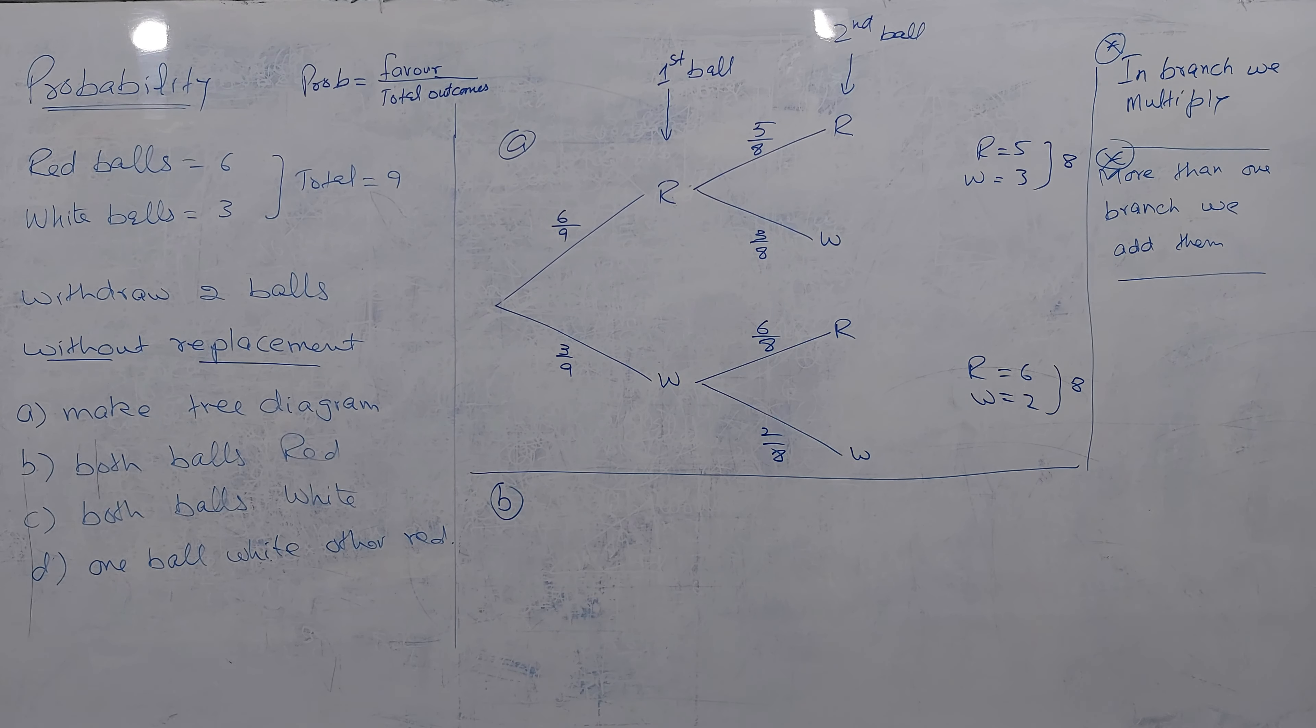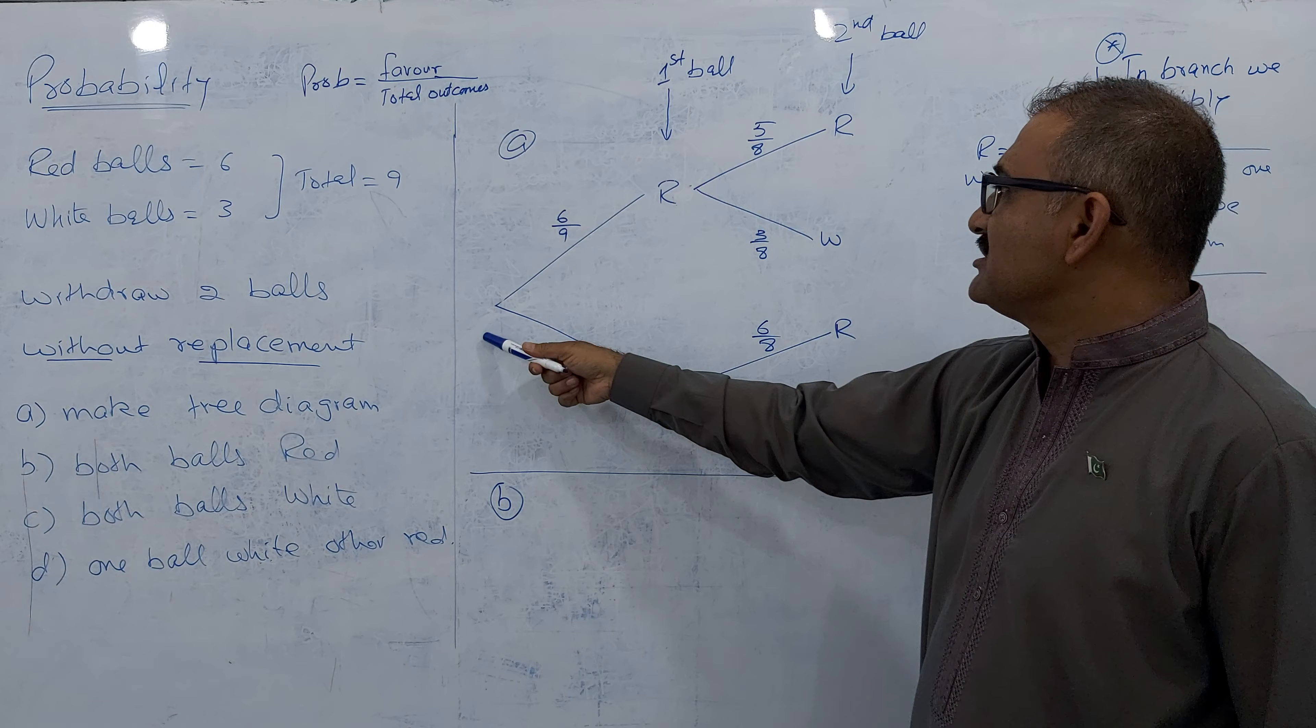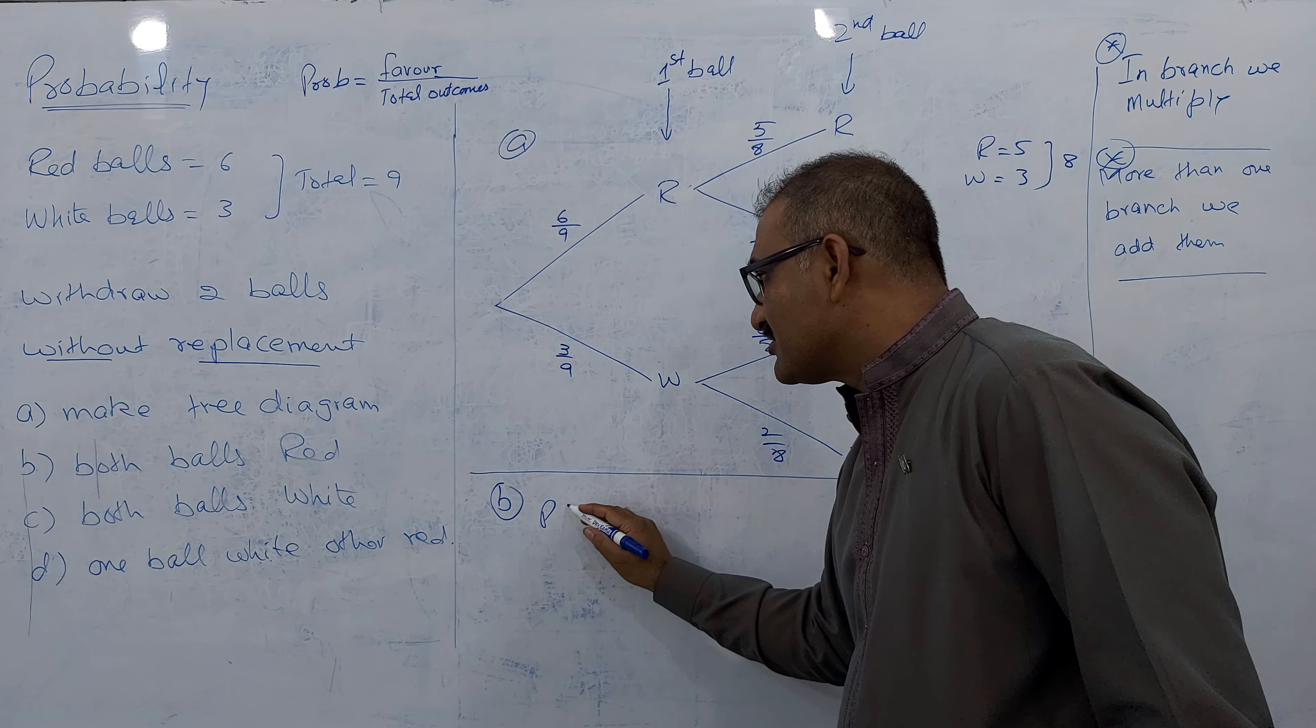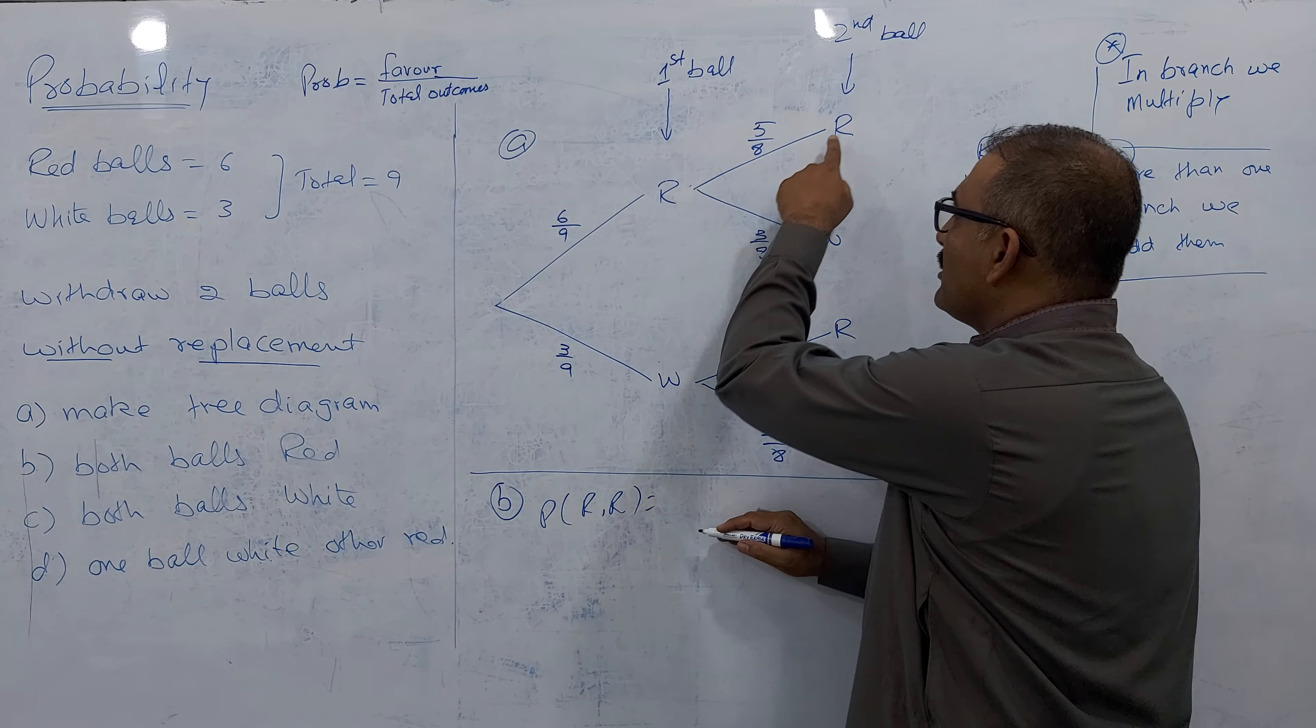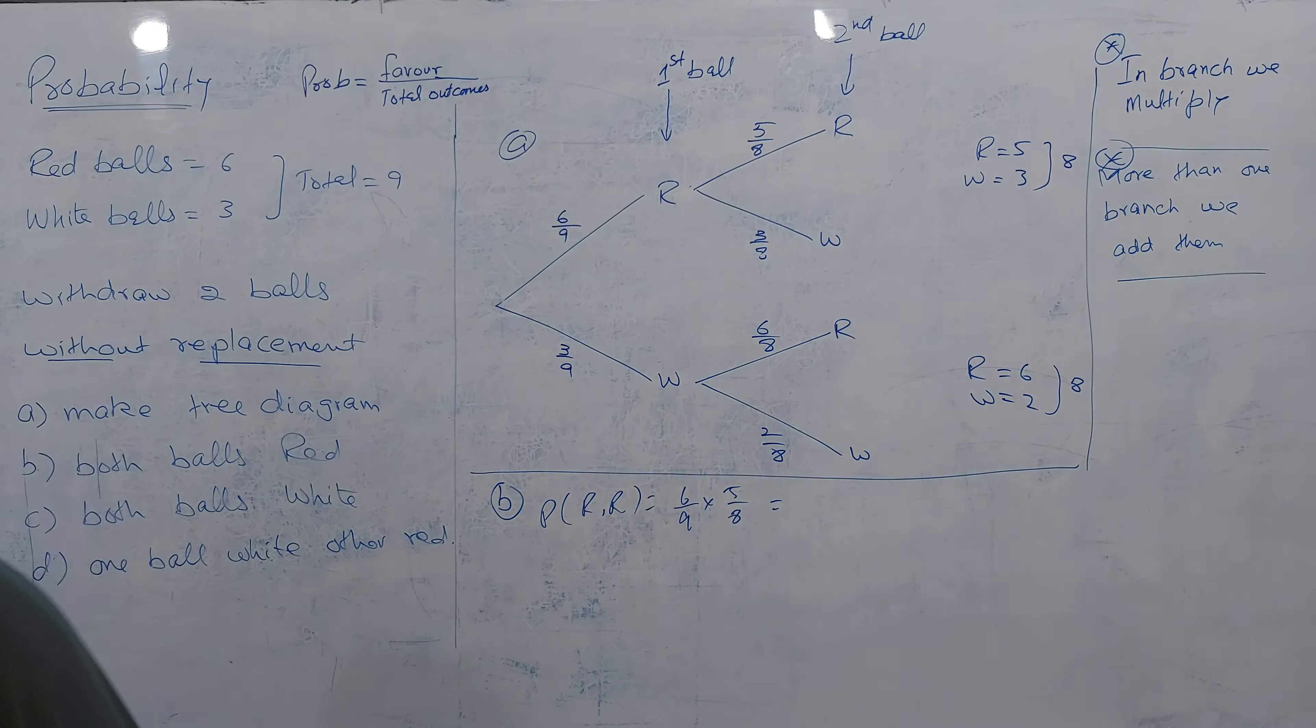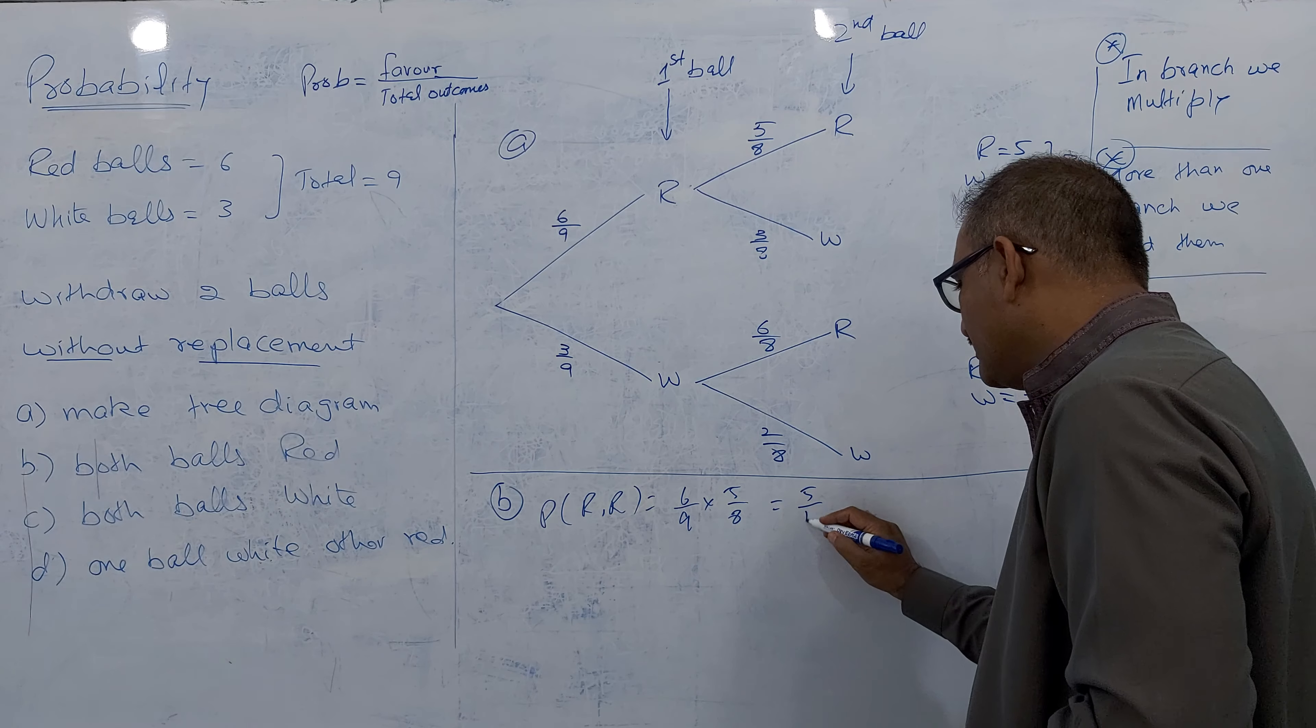Let's do it. If I'm looking for both balls red, red is here, red. So this branch red red. This is red white, this is white red, this is white white. What is the answer? Both red red. Red red. Answer is from here. Here is one branch, so multiply that. 6 by 9 times 5 by 8. Let's see what answer comes. 30 by 72. It becomes 5 by 12.